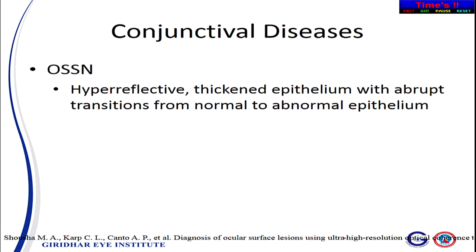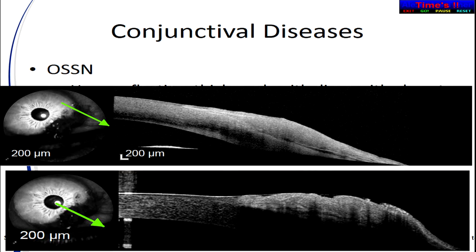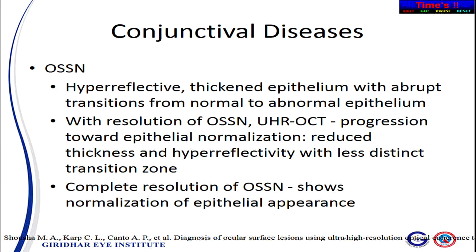OSSN — where ASOCT is maximally used in the anterior segment — shows thick and hyperreflective epithelium with an abrupt vertical transition from abnormal to normal epithelium. This is a definite indication of OSSN. When doing medical therapy in OSSN —